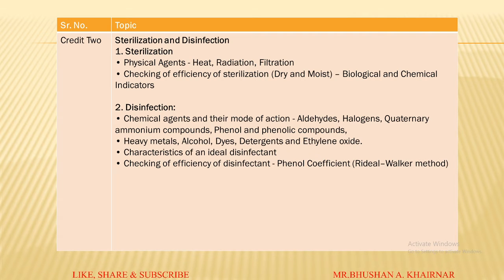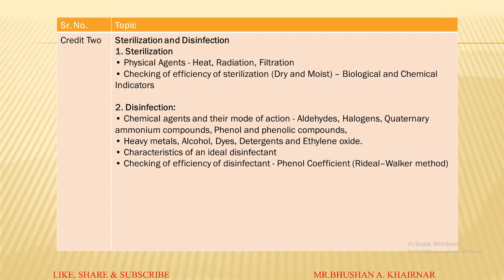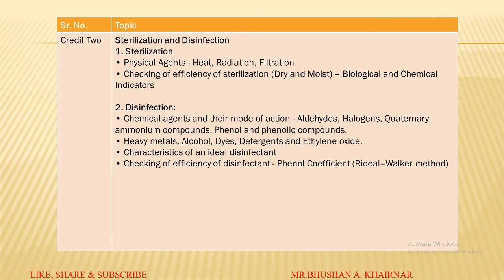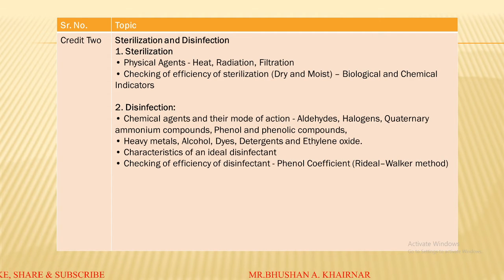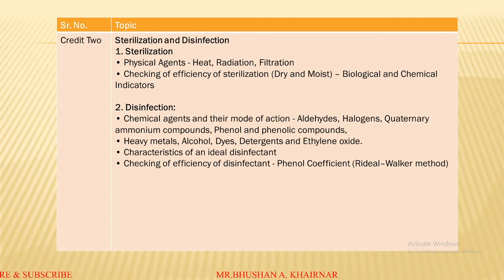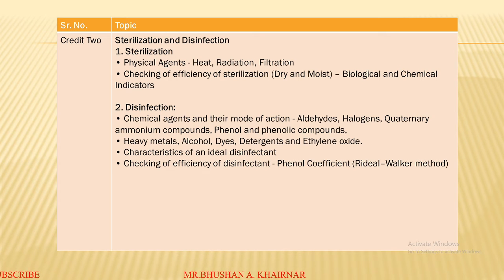Another topic is checking the efficiency of sterilization — how you find out that a particular medium or component is sterilized and no microorganism is present. You can check efficiency using biological and chemical indicators. We will study dry and moist sterilization processes: the example of dry sterilization is an oven, and the example of moist sterilization is an autoclave. We will study the oven and autoclave and different kinds of instruments used in microbiology.